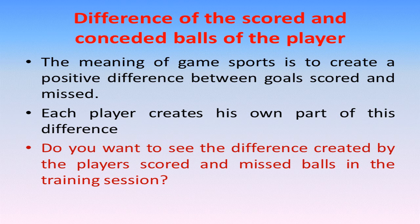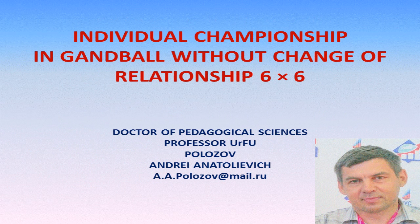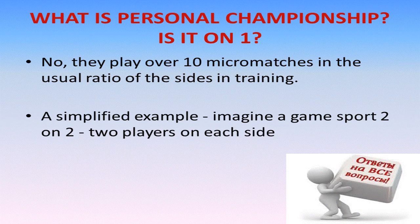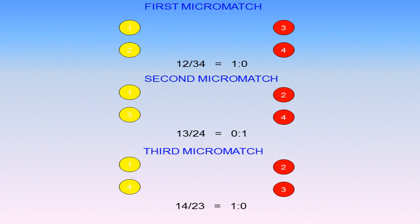The result of any game is a positive difference in goals scored and conceded. This difference is made up of the differences created by the players. Each player wins or loses combat, and thus forms their own difference and the difference of the whole team.